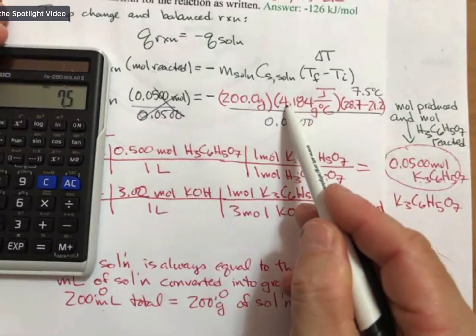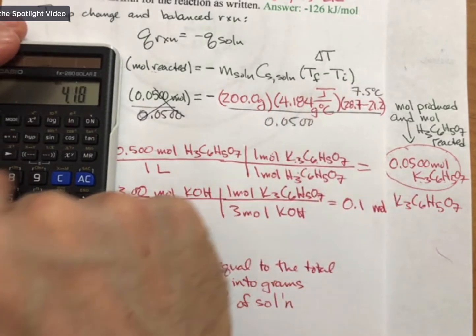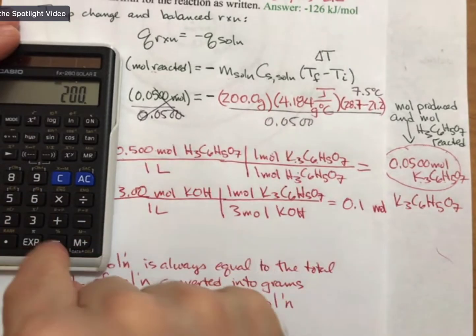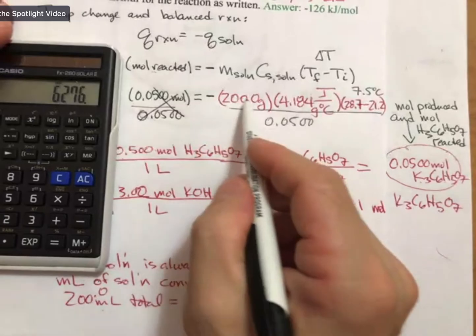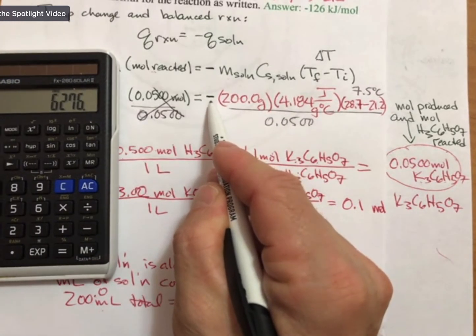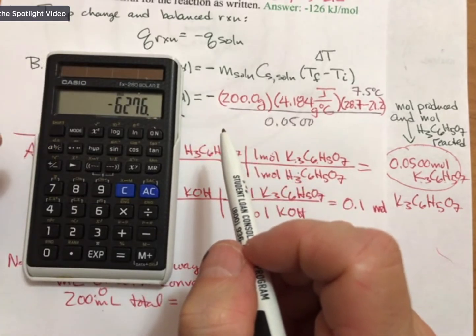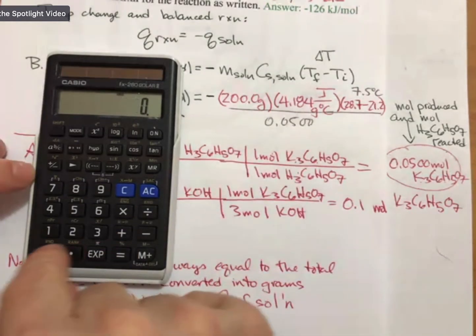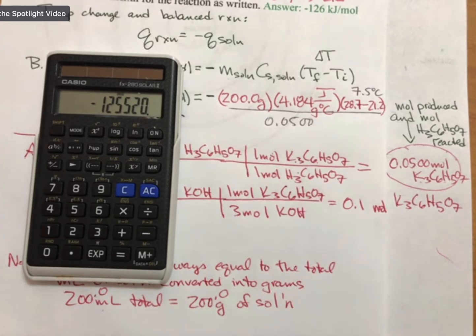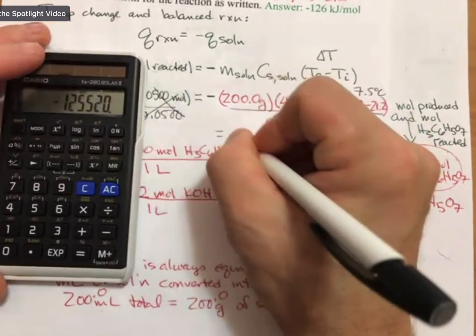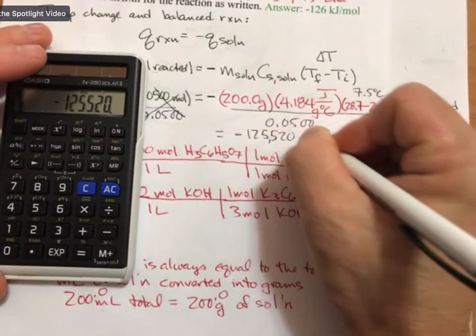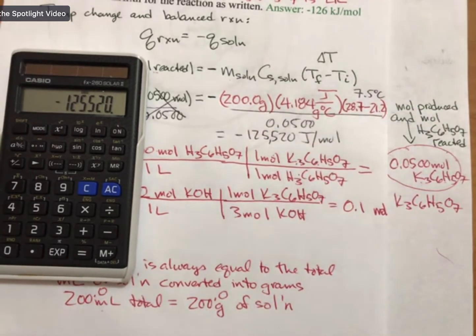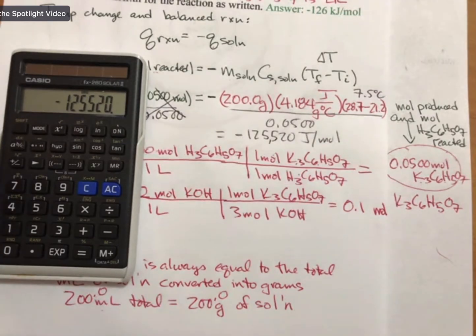Then I'm going to multiply it times the 4.184 times the 200, and I get 6276, but now I'm going to put in this minus sign by hitting the plus minus button, and then I'm going to divide by 0.05, and I get 125,520, which rounds to three sig figs. So that's going to be minus 125,520 joules per mole, and then when I convert that to kilojoules per mole, I get minus 125.5, which I then round to 126.